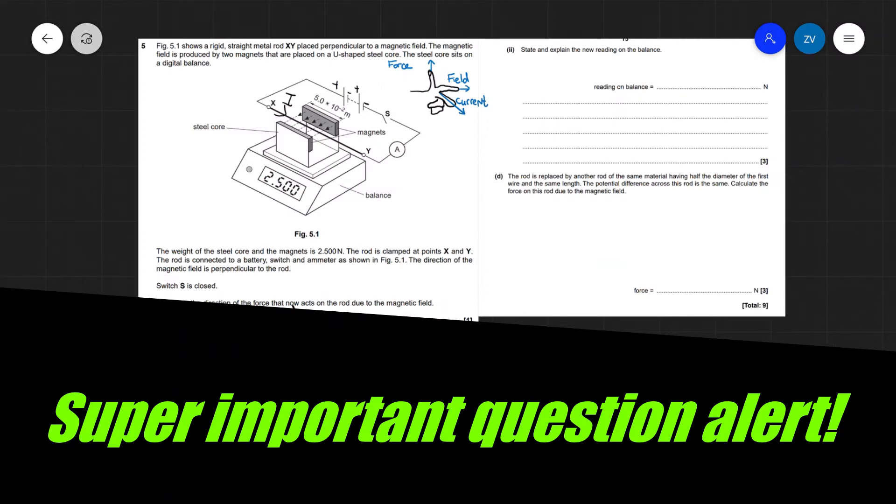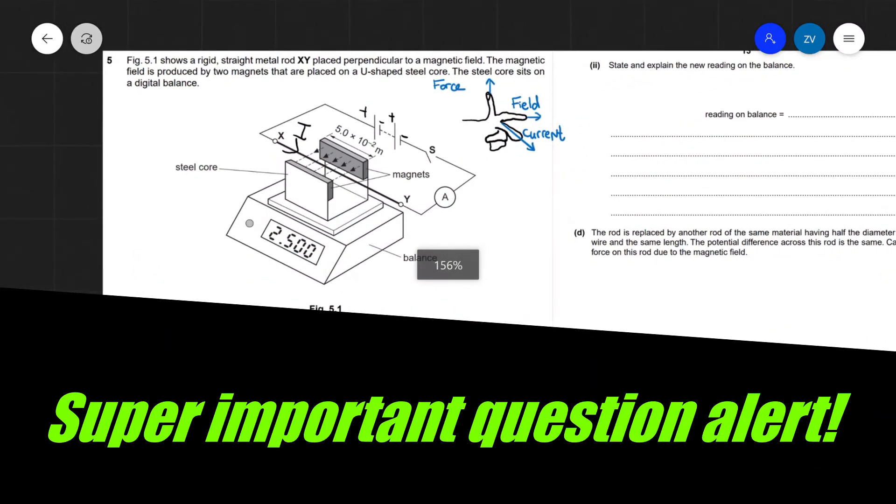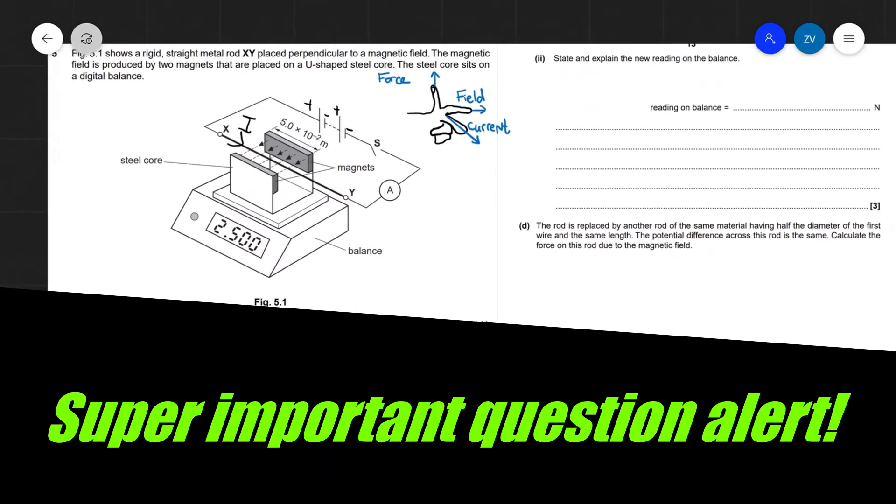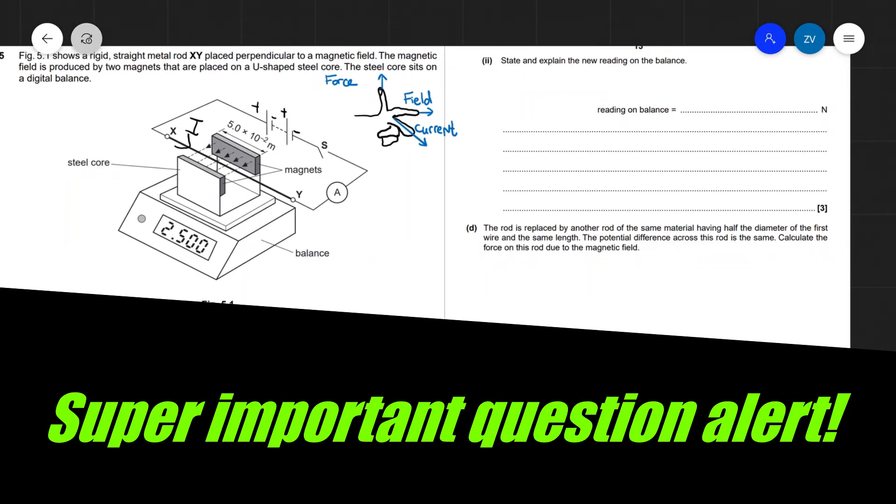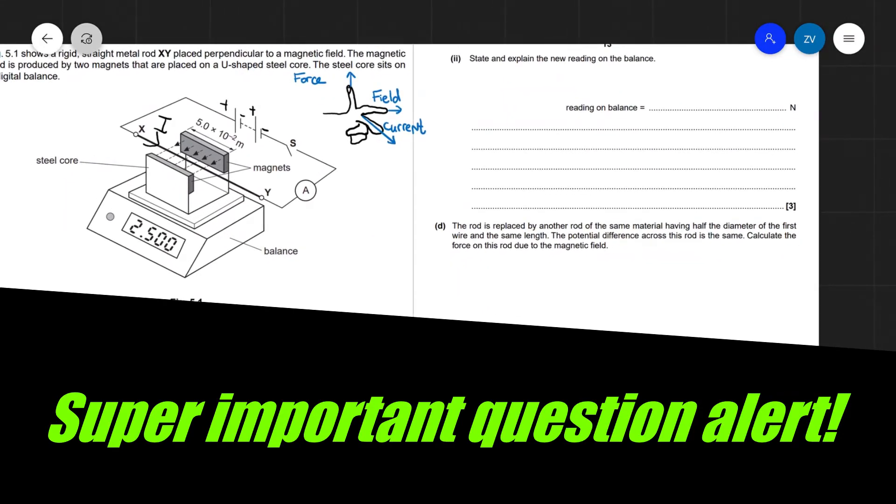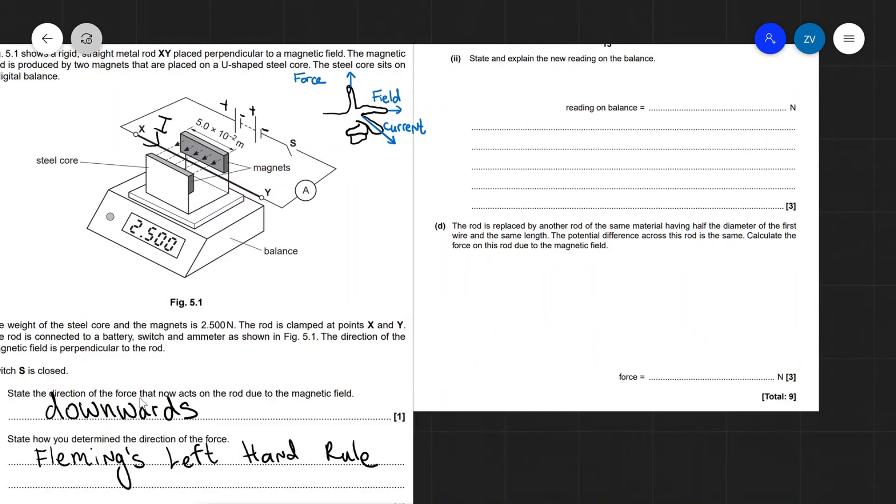The next question, or the next part of this question, is really tricky and it's often the point at which you tend to make a mistake potentially. So state and explain the new reading on the balance. So far we have found that the direction of the force that acts on the rod is pointing down. So the force on the rod is acting straight down.